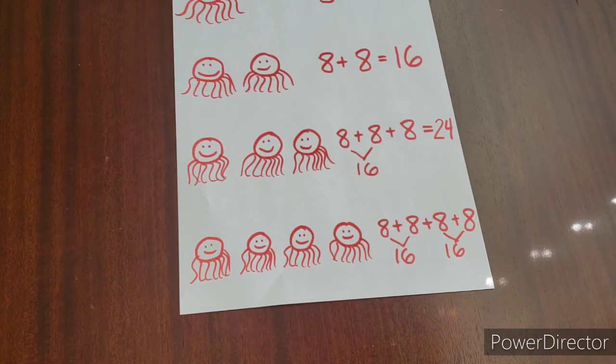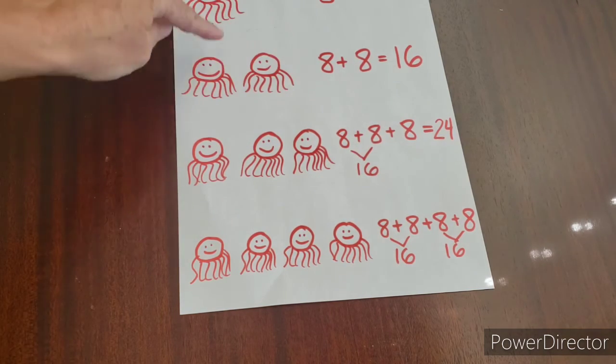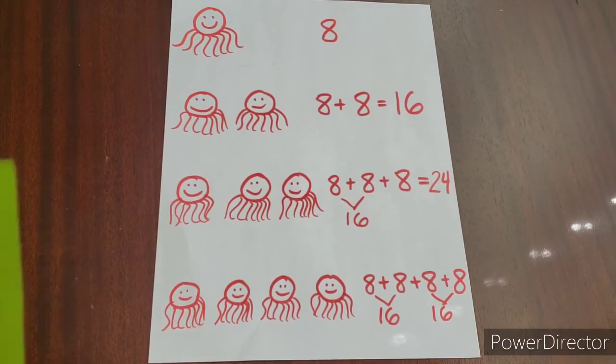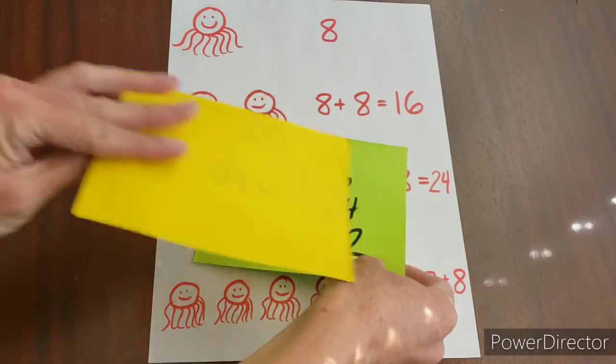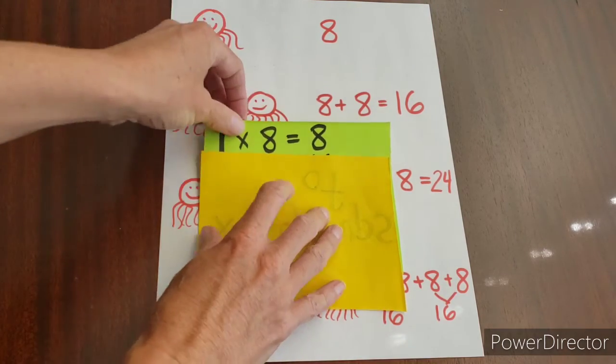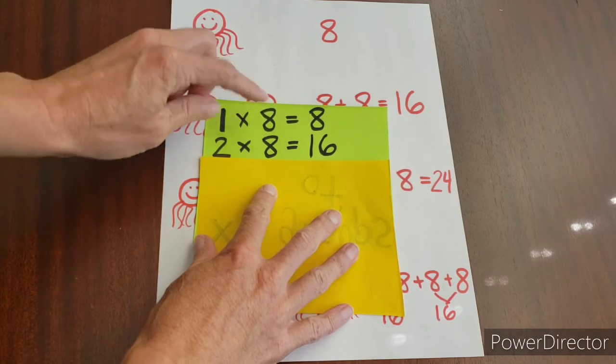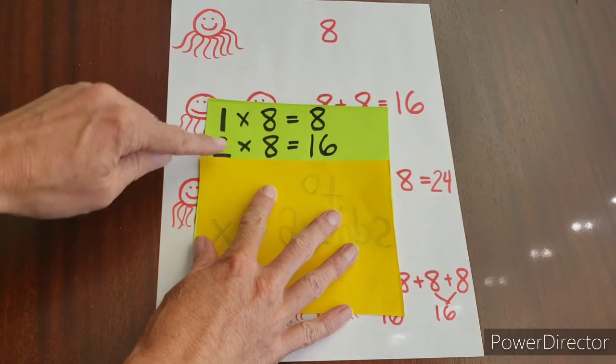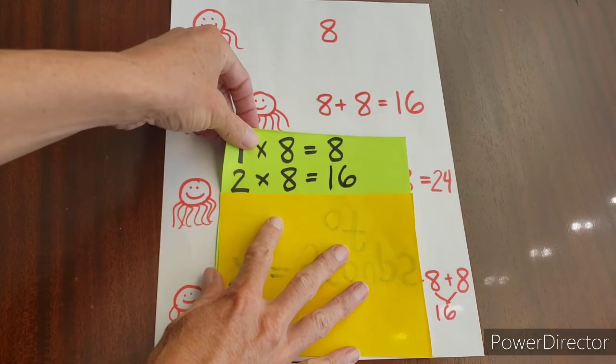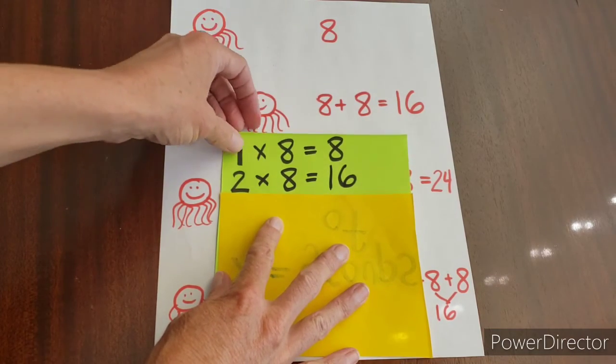So if we look at this, basically what we're doing is we're adding groups of octopi. Okay, and we know that one octopus is eight. Okay, two octopi, or eight plus eight, is two times eight, which is 16. And we did that right there when we said eight plus eight. Okay.